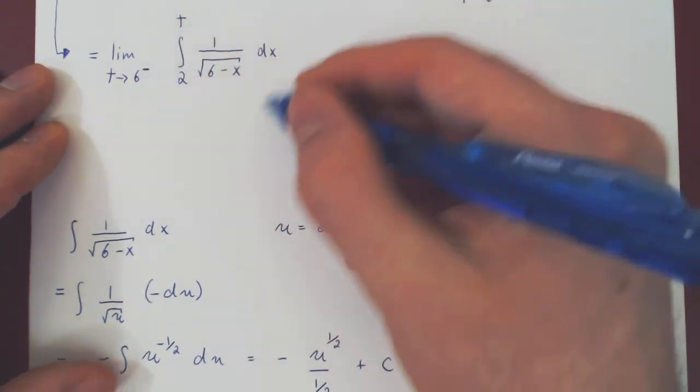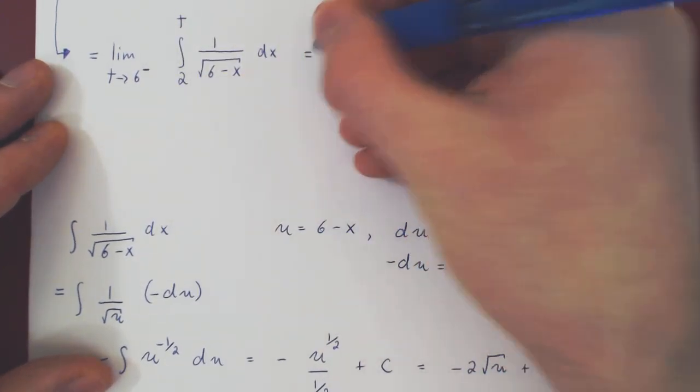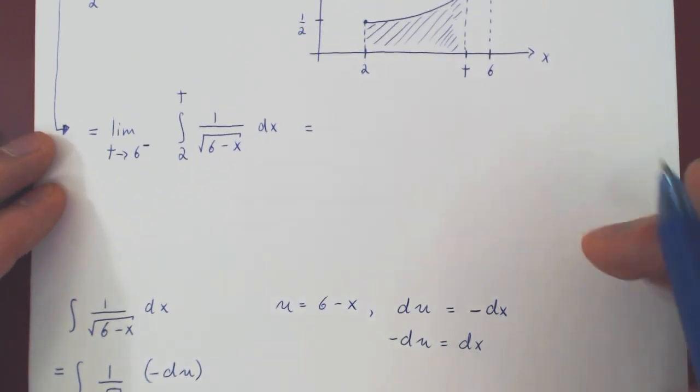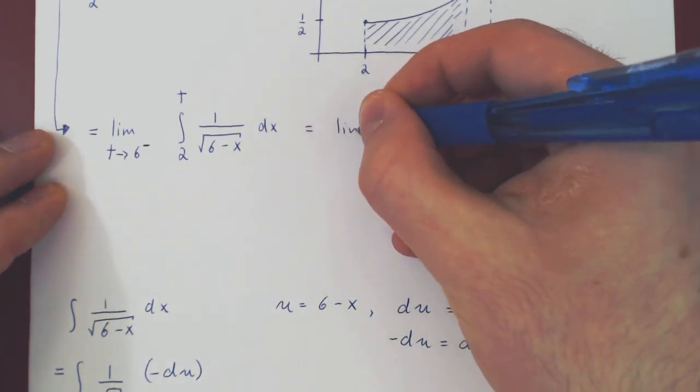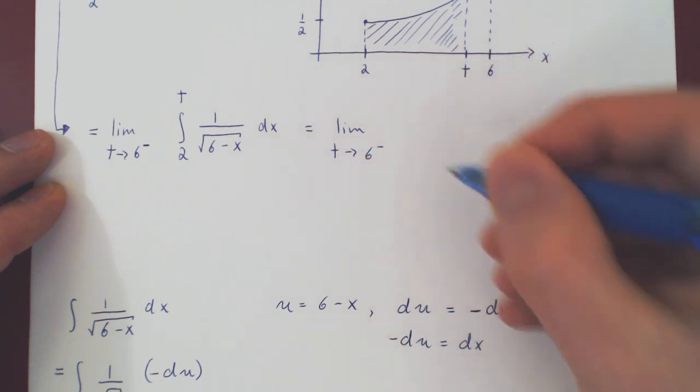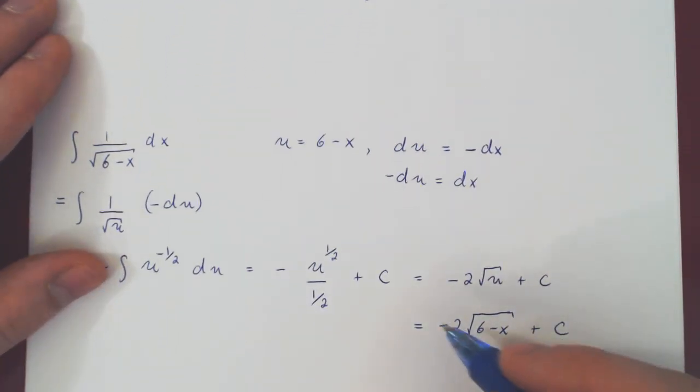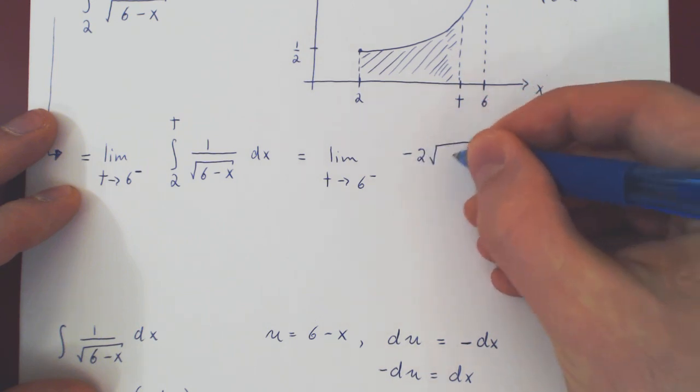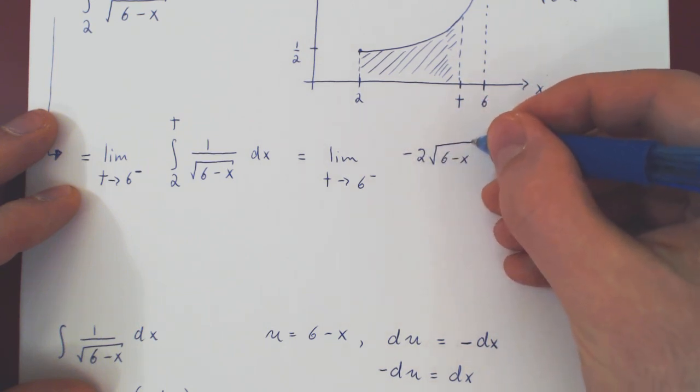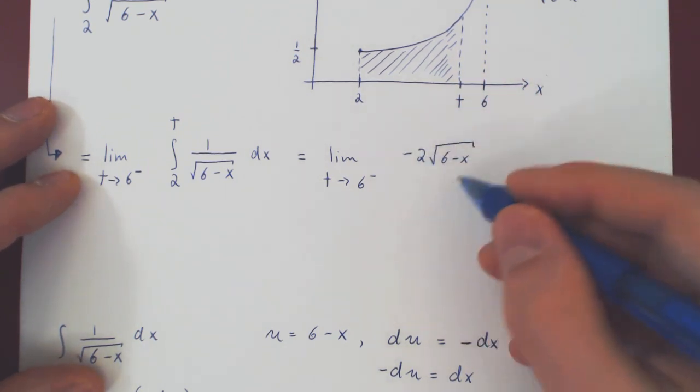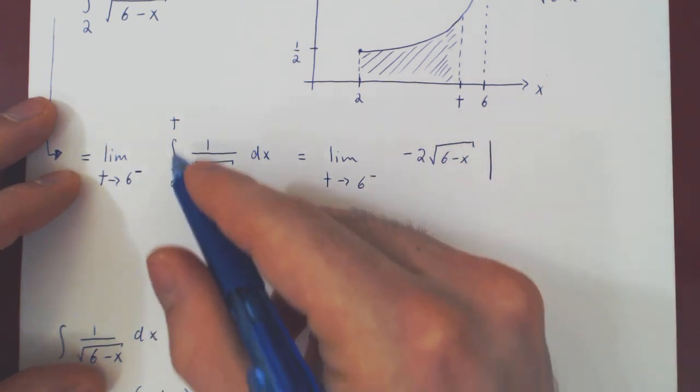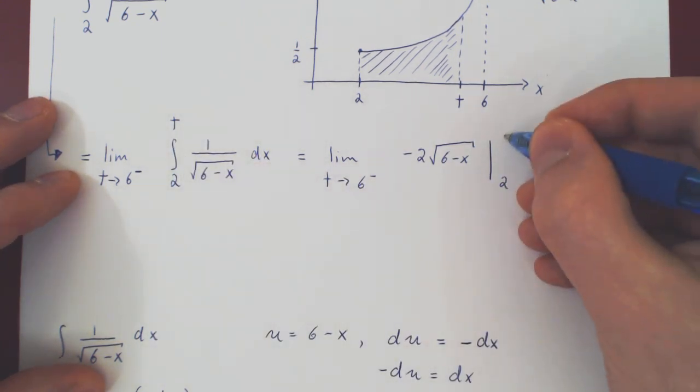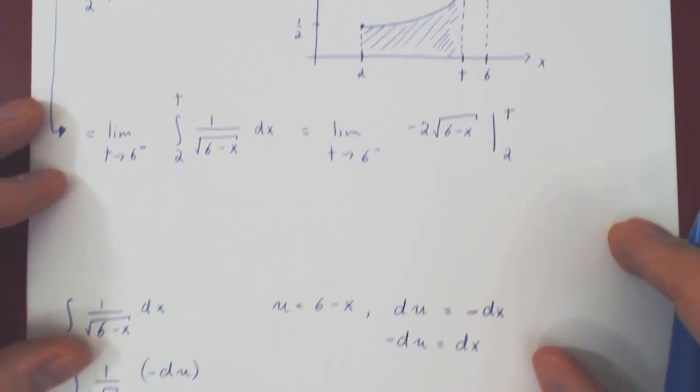So by the fundamental theorem of calculus, this is again the limit, as t approaches 6 from the left, of our antiderivative, we can drop the plus c. So negative 2 root of 6 minus x. And we must evaluate the antiderivative from 2 to t. And now we're good to go.